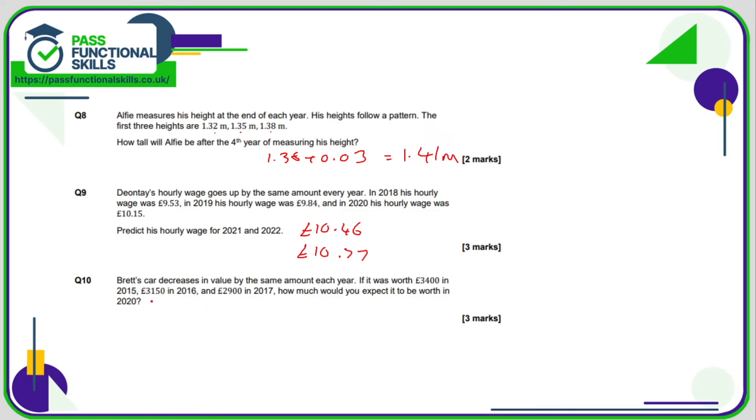Now let's take a look at question 10 and Brett's car. So it was worth £3400, dropped to £3150, so that is a drop of £250, and from £3150 to £2900, that's another drop of the same amount, which is £250.